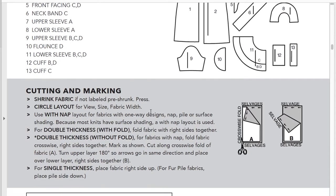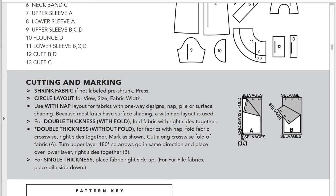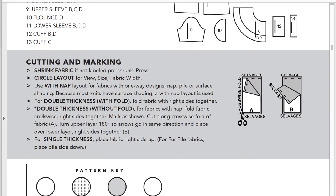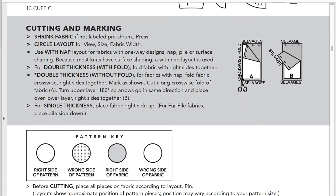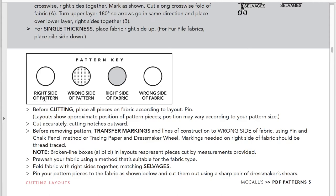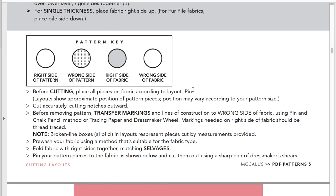The booklet also gives you tips. First, and you should be doing this anyway: always wash your fabric and press it before you use it, because it could shrink or shift. Unless you plan on just steaming or dry cleaning your items, always wash and press. It'll also talk about with fold, without fold, single thickness, and the pattern key. The pattern key is really important — it tells you about right side of pattern, wrong side of pattern, and how to orient pieces when laying out your fabric.